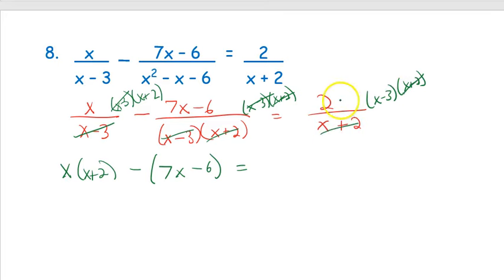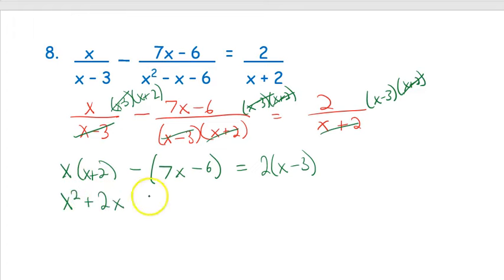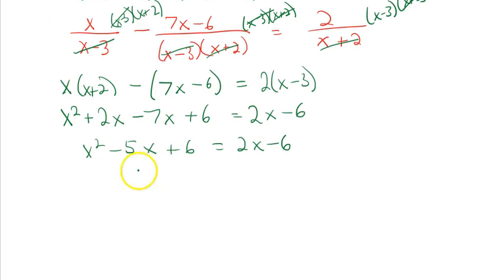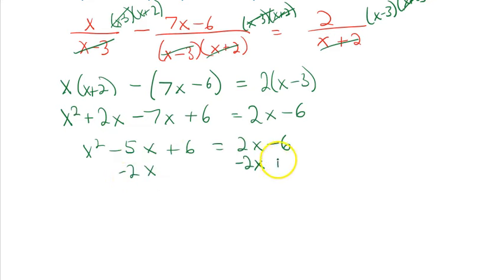The (x + 2)'s cancel, leaving 2(x − 3). Now I distribute: x times x is x², x times 2 is 2x; distributing the negative gives −7x + 6; distributing the 2 gives 2x − 6. Combining like terms: x² − 5x + 6 = 2x − 6. You have an x² and an x — they're not like terms and can't be combined, which tells you this is a quadratic.